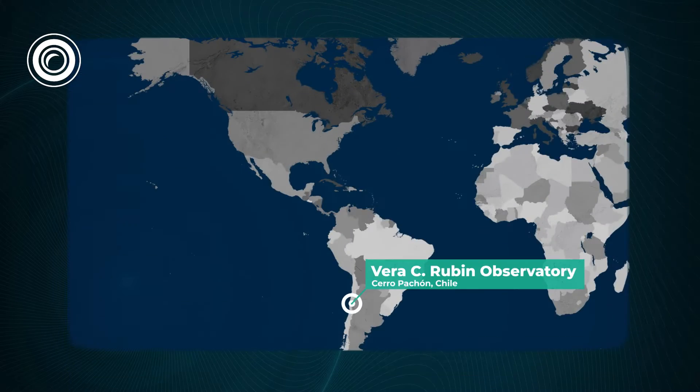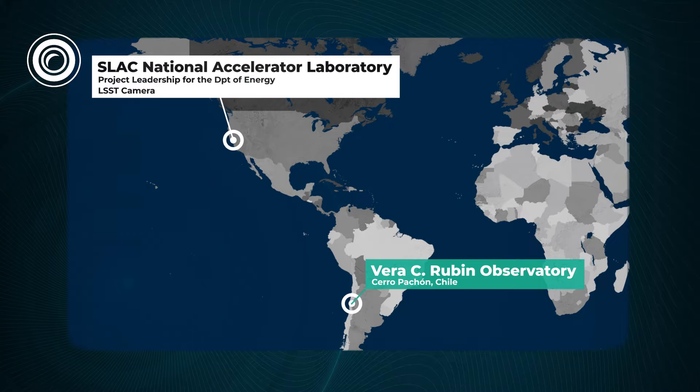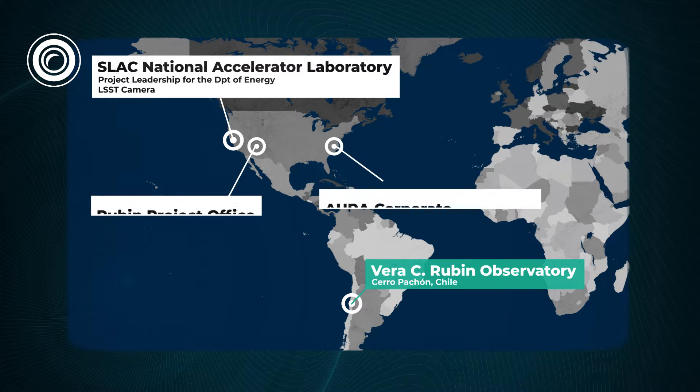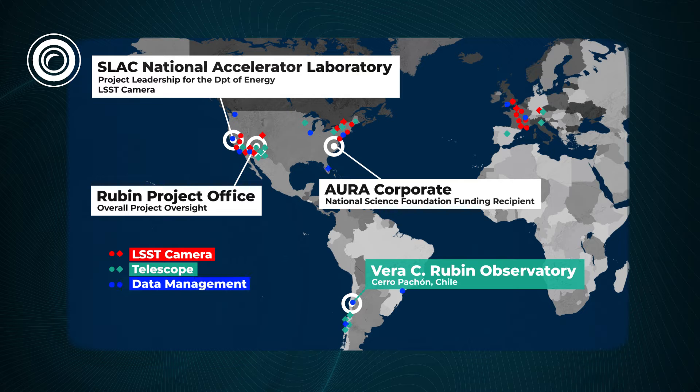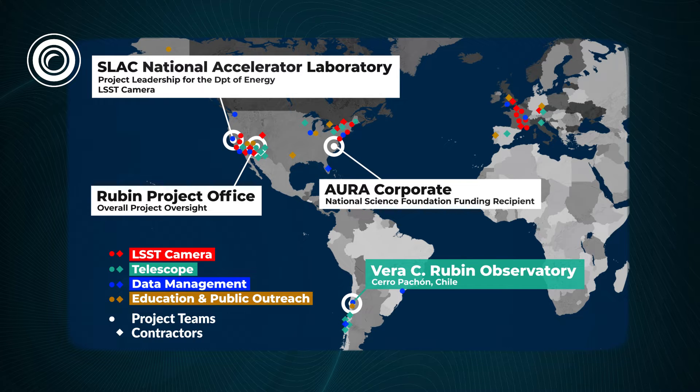While the telescope itself is being built in Chile, the centerpiece camera module is being assembled right here at SLAC, using parts developed at SLAC and at other institutions around the world. As you can see from this map, the coordinated effort it took to bring together so many widespread teams was an enormous feat.